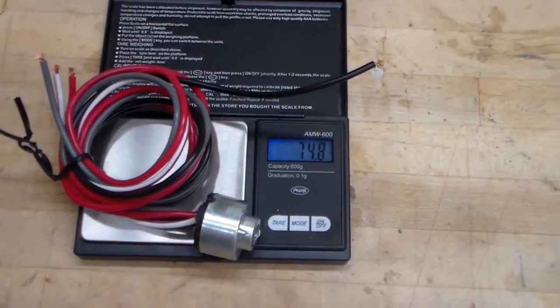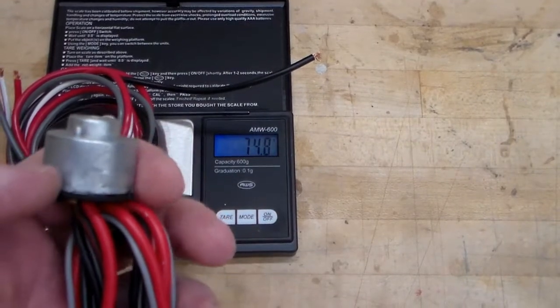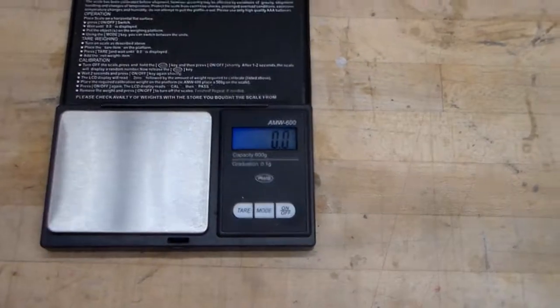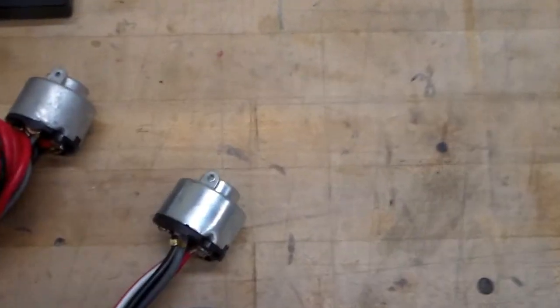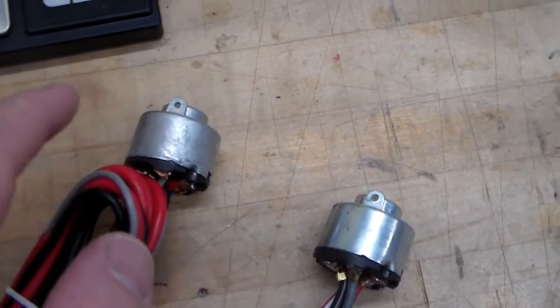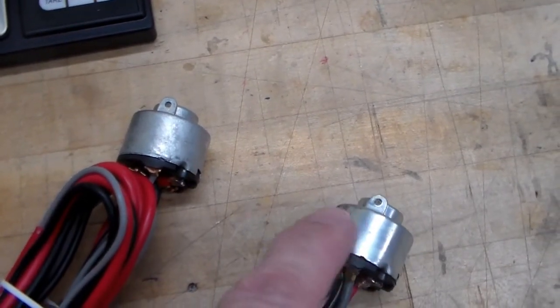So it actually weighs less than the one from Taiwan. Does it make a difference? I don't know. I suspect it's simply the different kind of metal used on the switch body itself. As we can see here, they do look different. This is the German one and this is the one from Taiwan.